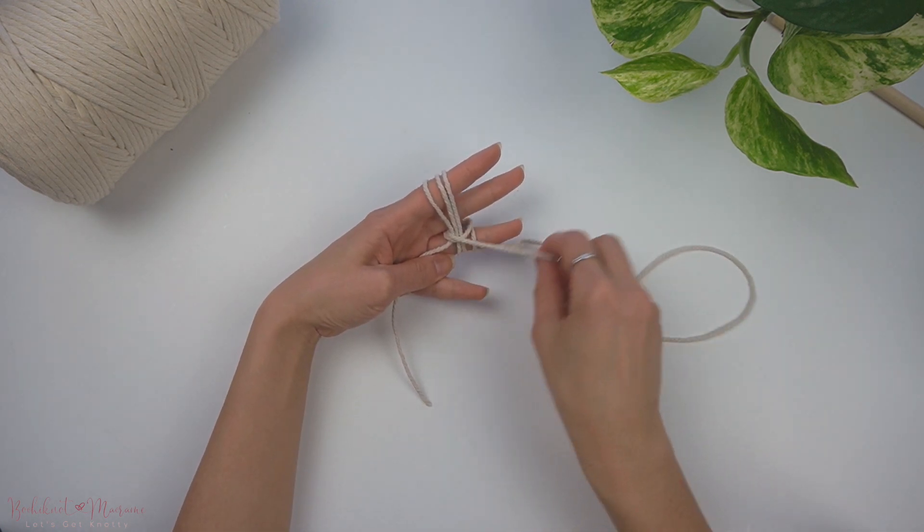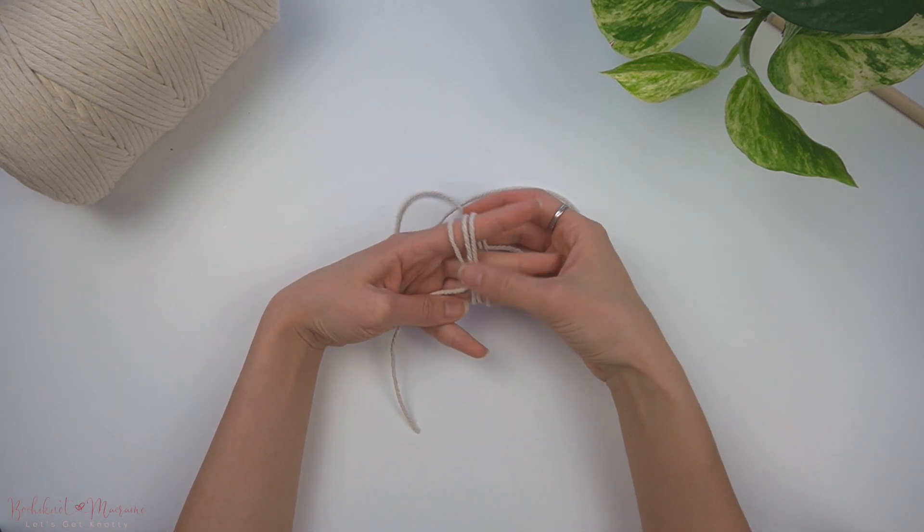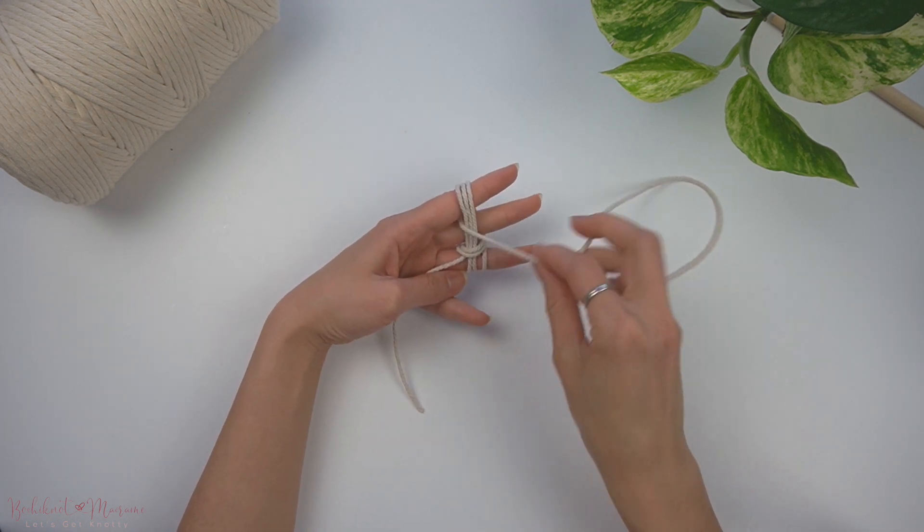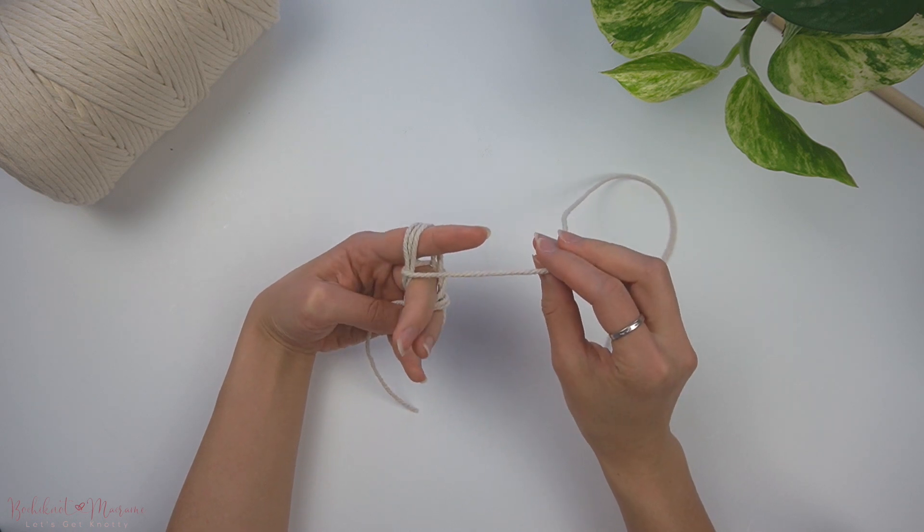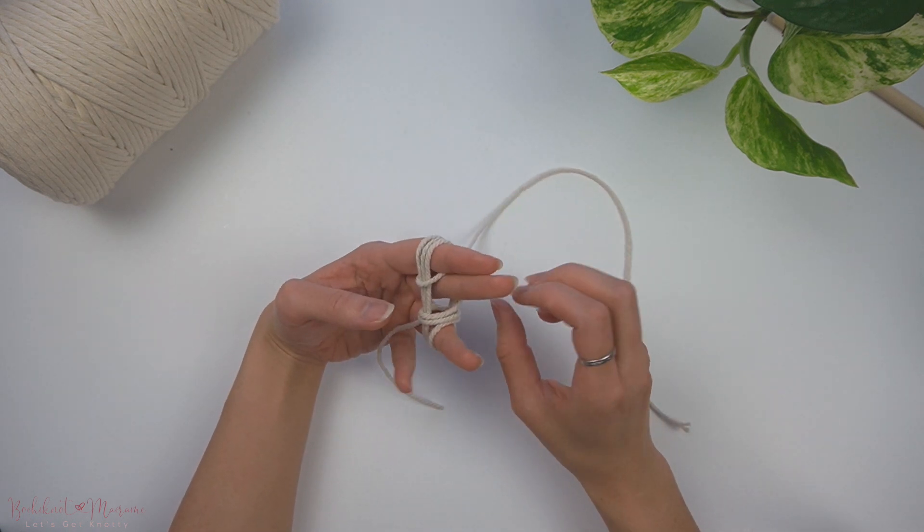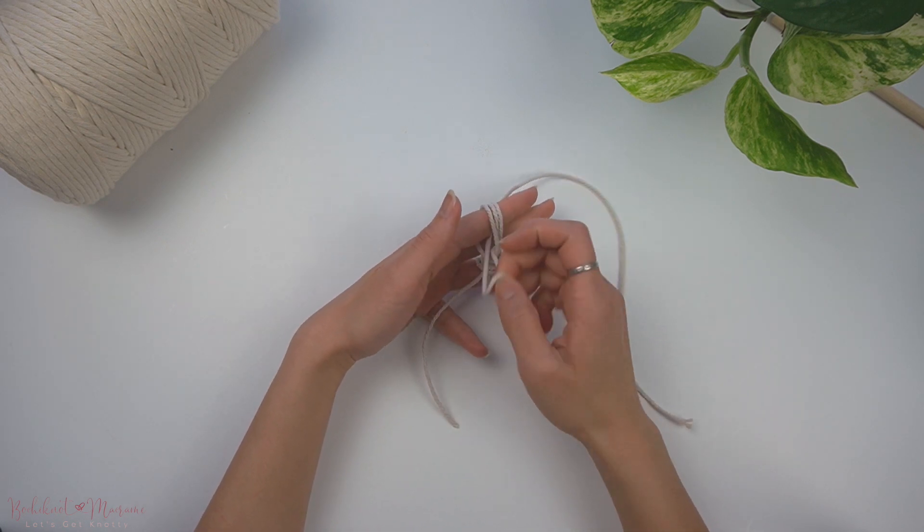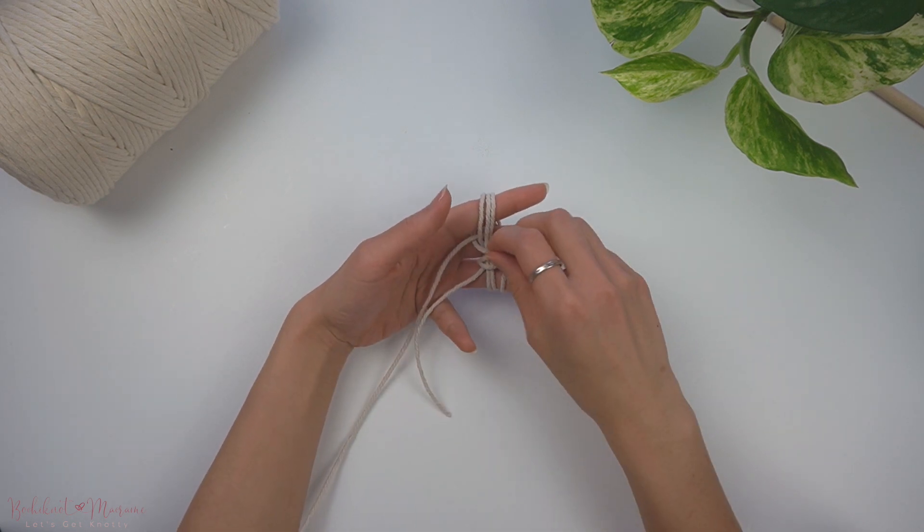And then on the third time, bring the cord through the hole between the first and second finger up at the top. Then wrap that cord through the front and through the loop on the left.